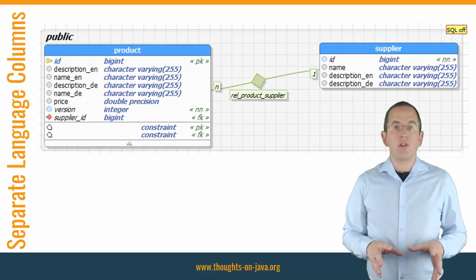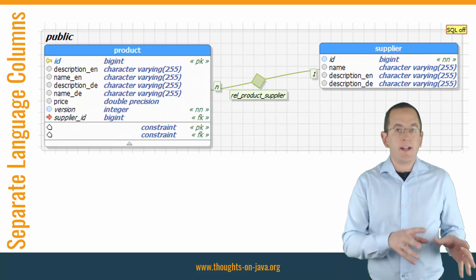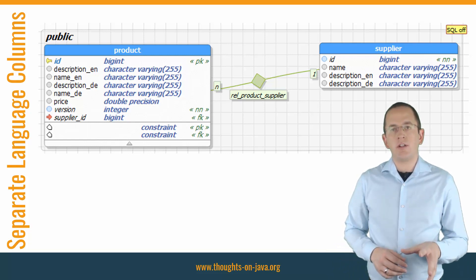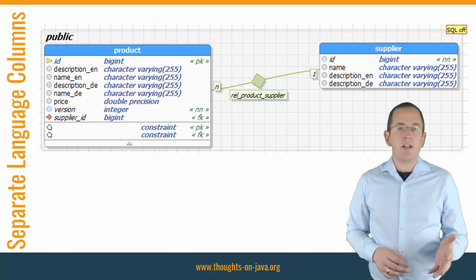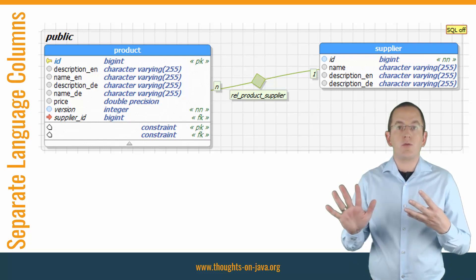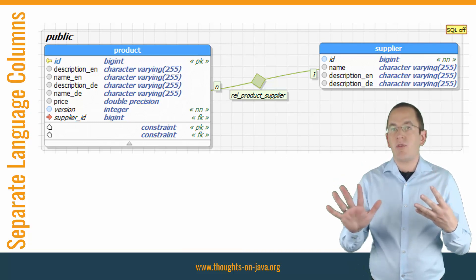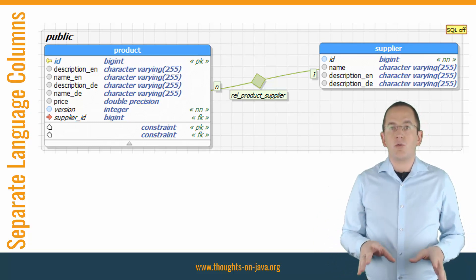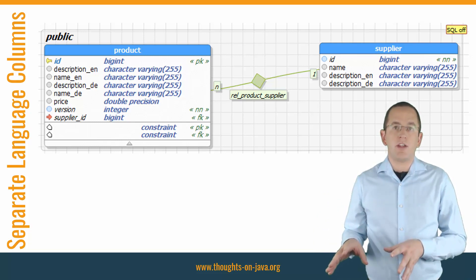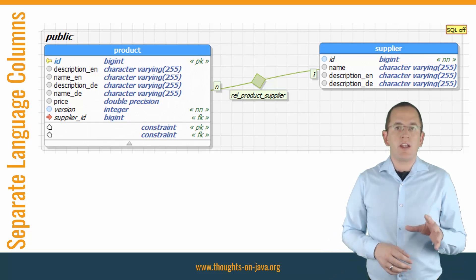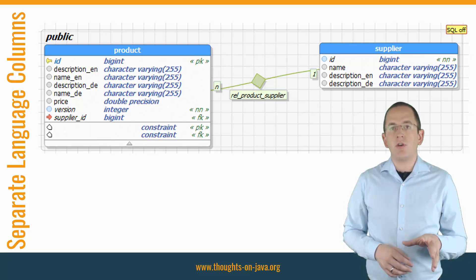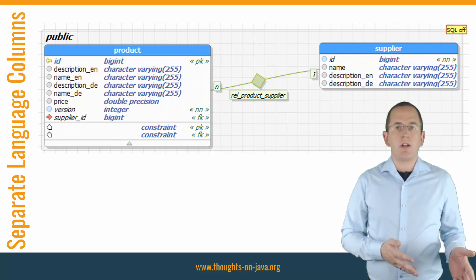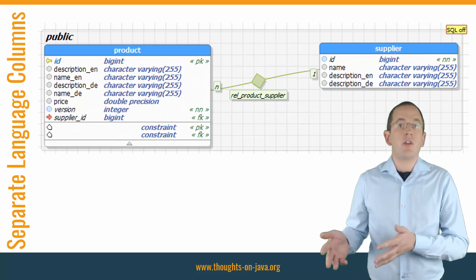The general idea of the first approach is simple: for each localized attribute and language you need to support, you add an extra column to your table. Depending on the number of supported languages and localized attributes, this can result in a vast amount of additional columns. If you want to translate 4 attributes into 5 different languages, you would need to model 4 times 5, which are 20 database columns. In the previously described example, you need 4 database columns: description_en, description_de, name_en, and name_de.